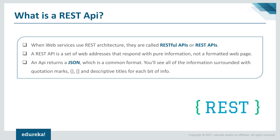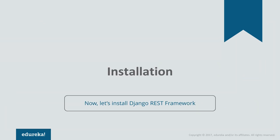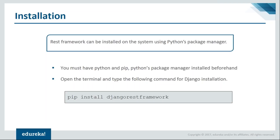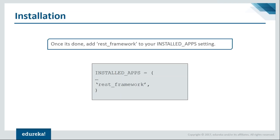Enough of the theoretical part — let's jump into the demo where I'll help you create your first RESTful API from scratch. First, you need to install the REST framework. Everything can be installed using Python's package manager. From the command line, just type pip install djangorestframework. Or if you're using PyCharm, you can install it directly from Settings the same way you do for other packages. Once installation is done, you need to add this framework in your installed applications.